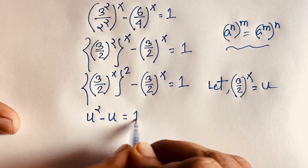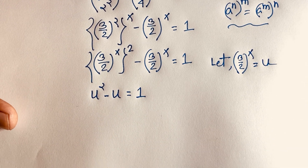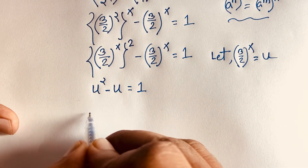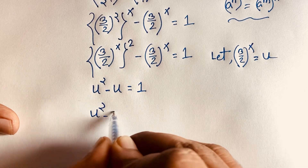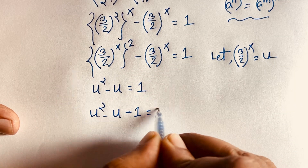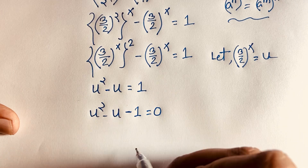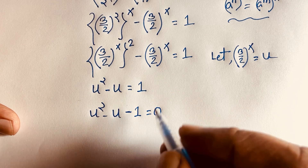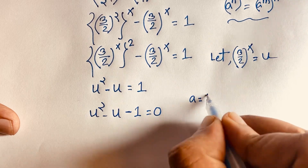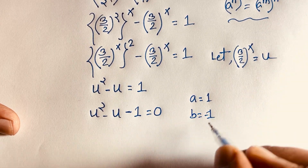We now have a nice quadratic equation. Moving 1 to the left side, it becomes u squared minus u minus 1 is equal to 0. Here a equals 1, b equals negative 1, and c equals negative 1.